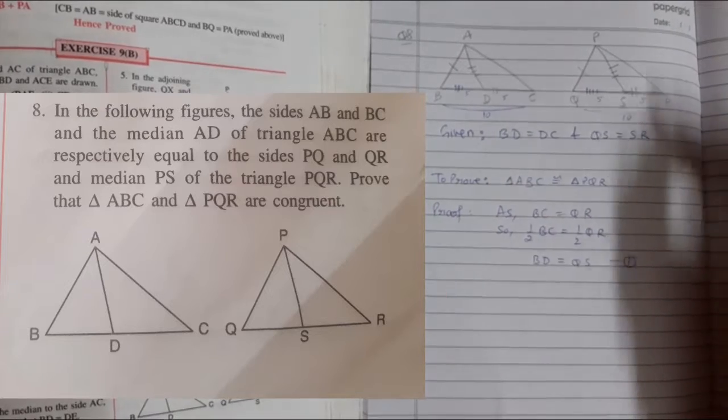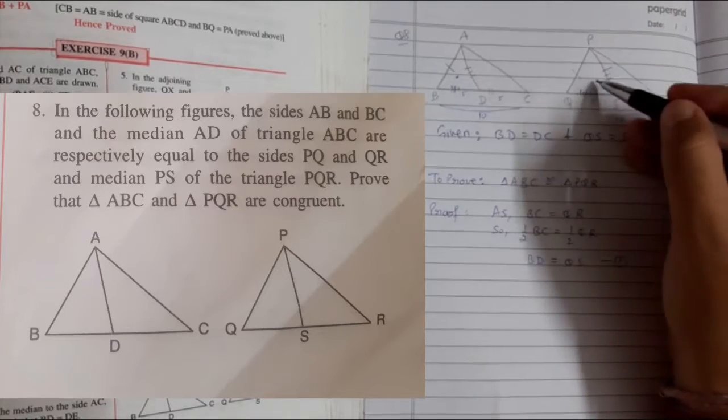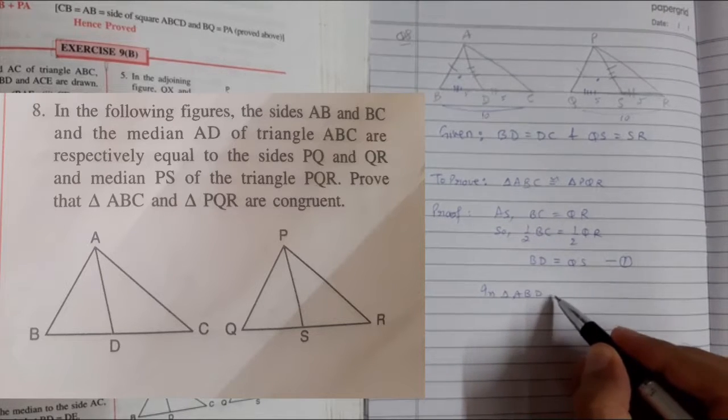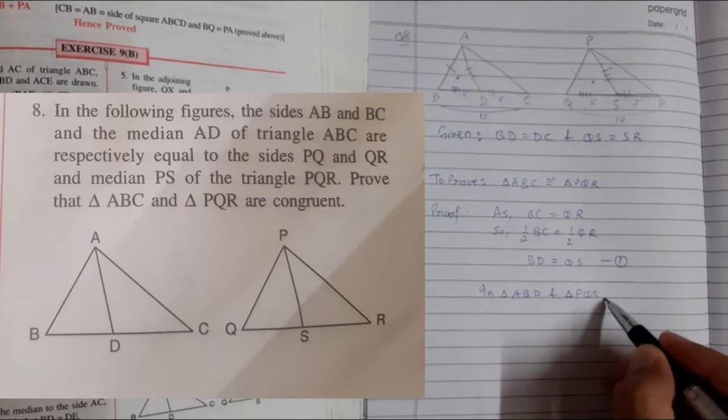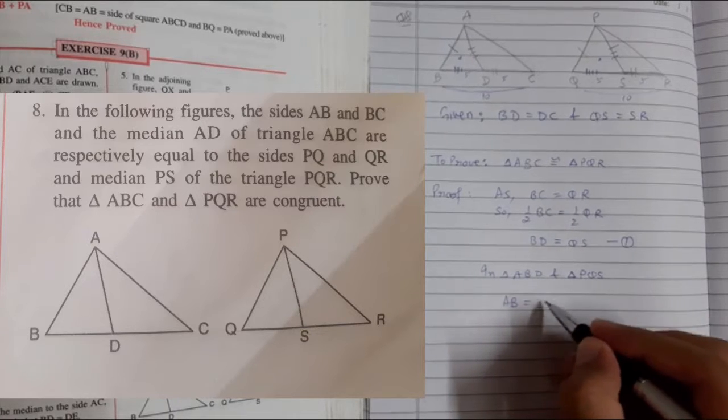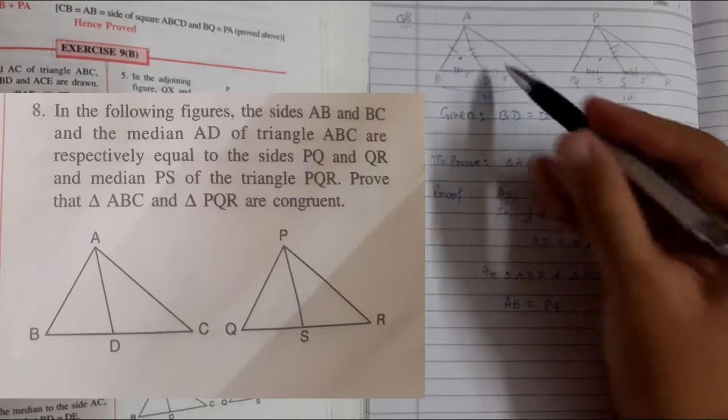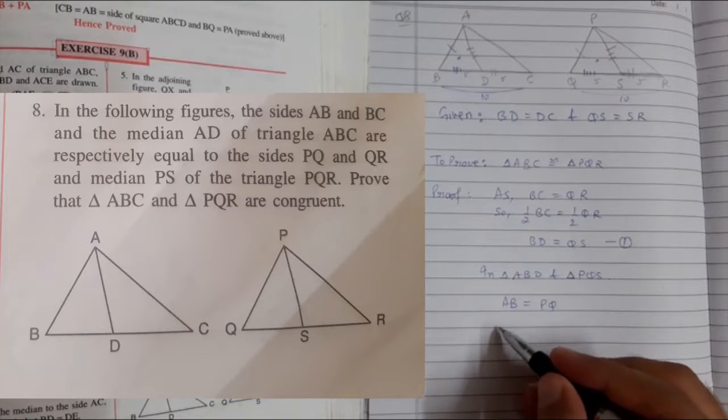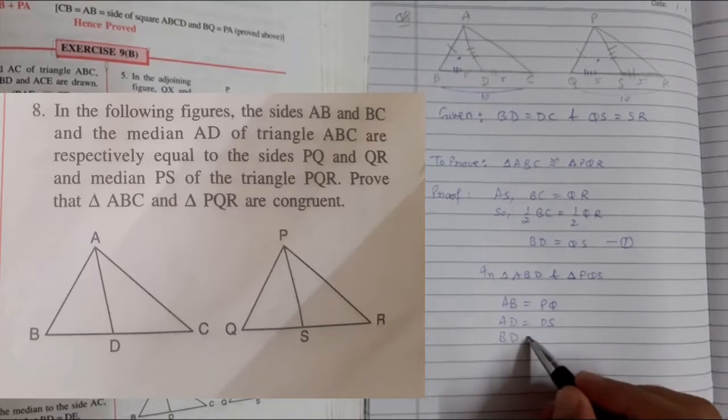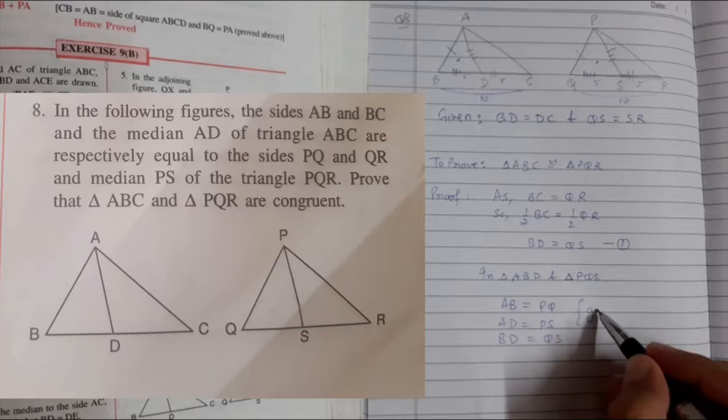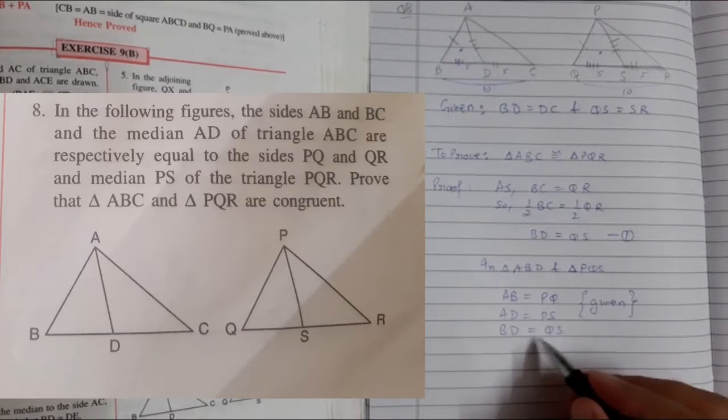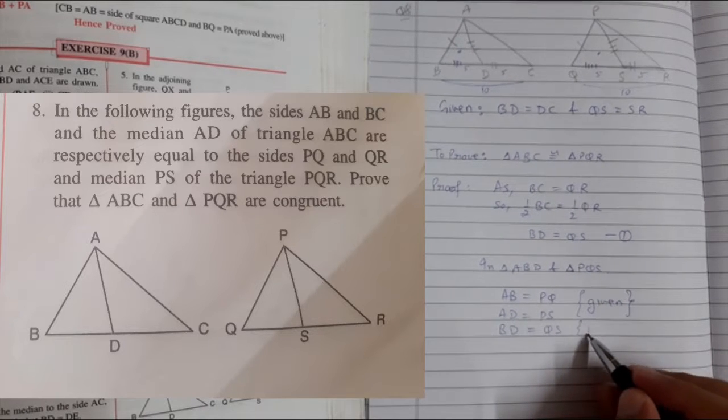Can we do the congruency for these two triangles? In triangle ABD and triangle PQS: first, AB equals PQ; second, AD equals PS; and third, BD equals QS. The first two were given in the question, and BD equals QS we proved above.